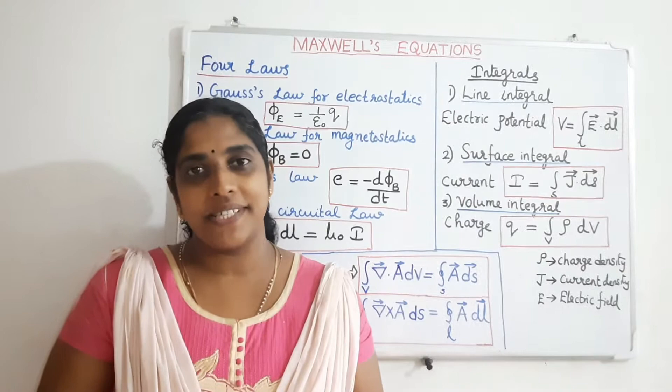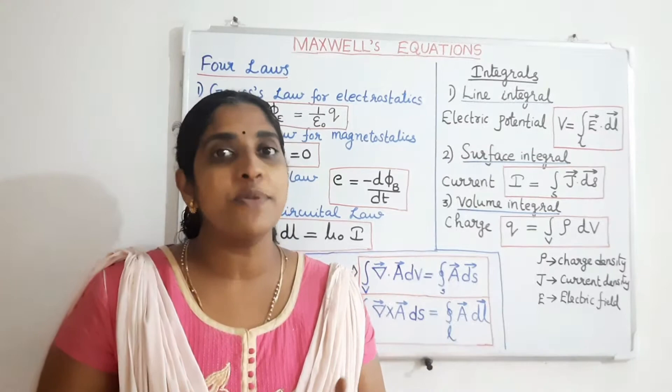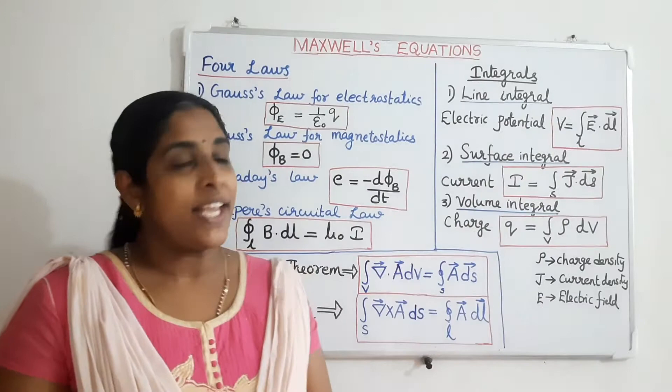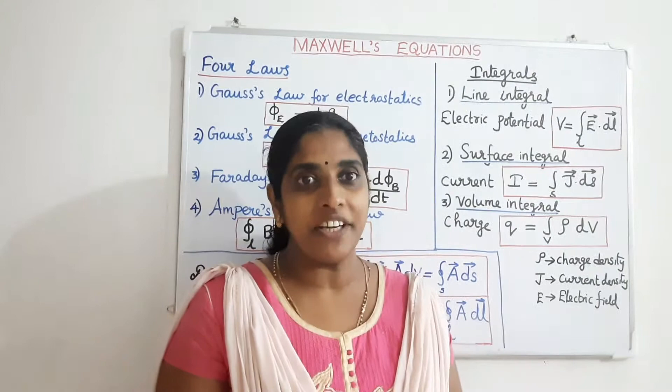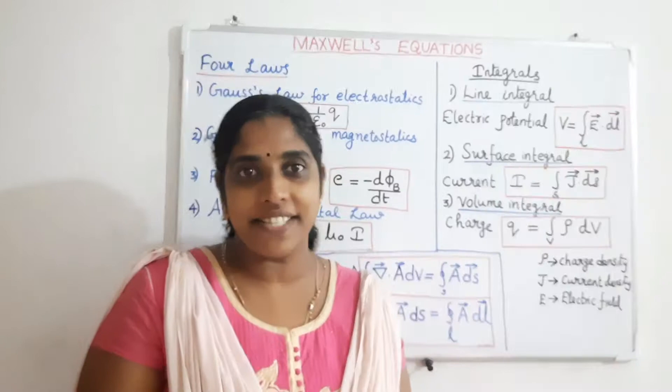In deriving Maxwell's equations, the physical quantities involved in these basic laws are written in terms of integrals. There are mainly three types of integrals we are using: line integral, surface integral, and volume integral. The electric potential V can be written as the line integral of the electric field. The current I is the surface integral of the current density J. And charge Q is the volume integral of the charge density. With the help of these integrals, we write these laws in integral form.